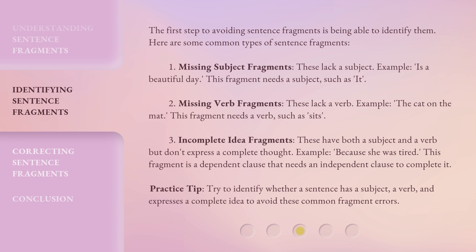Second: Missing verb fragments. These lack a verb. Example: "the cat on the mat." This fragment needs a verb, such as "sits." Third: Incomplete idea fragments. These have both a subject and a verb, but don't express a complete thought. Example: "because she was tired." This fragment is a dependent clause that needs an independent clause to complete it. Practice tip: Try to identify whether a sentence has a subject, a verb, and expresses a complete idea to avoid these common fragment errors.